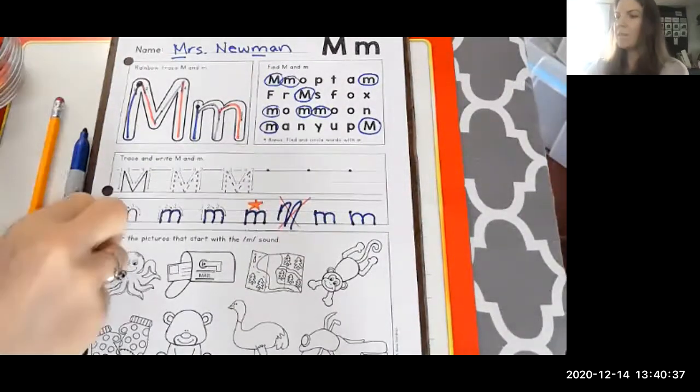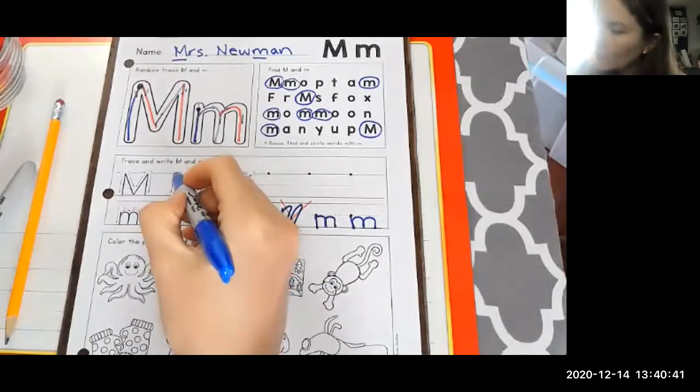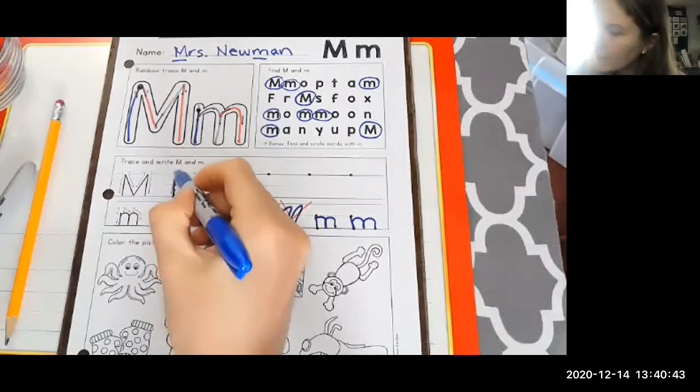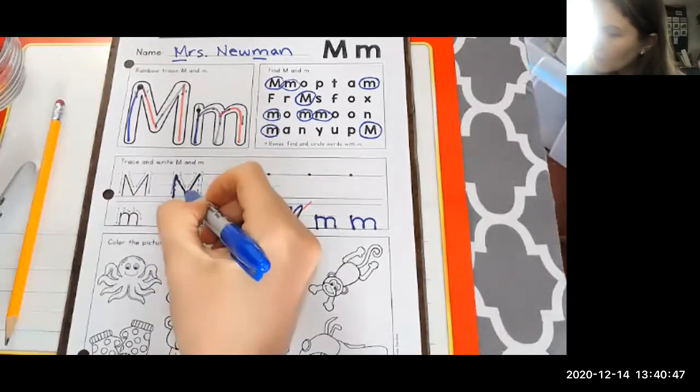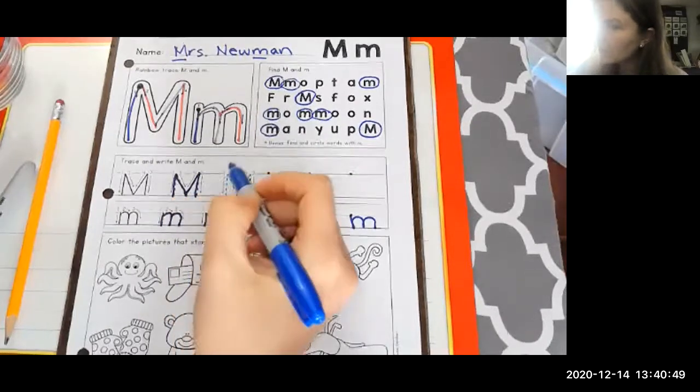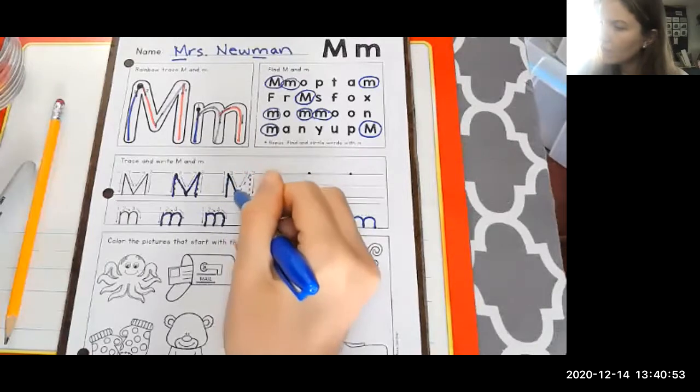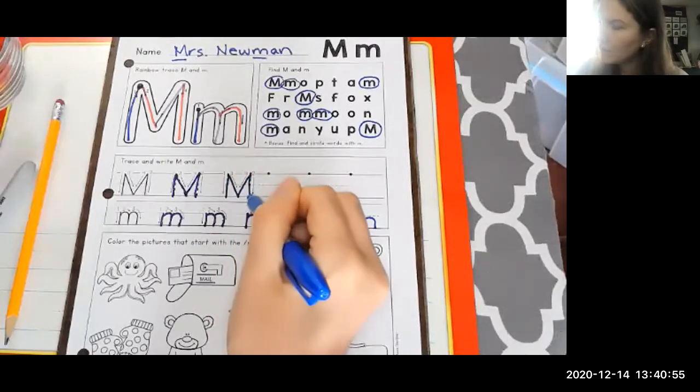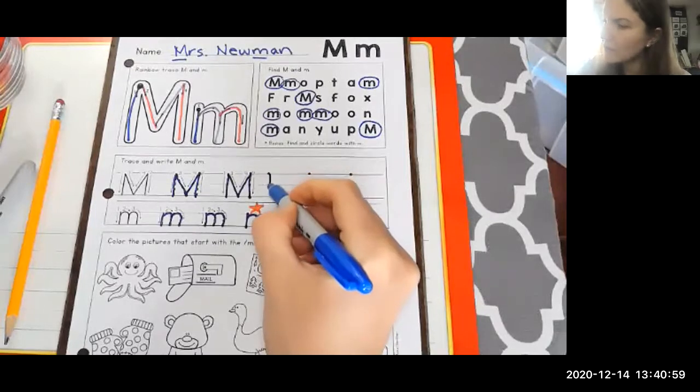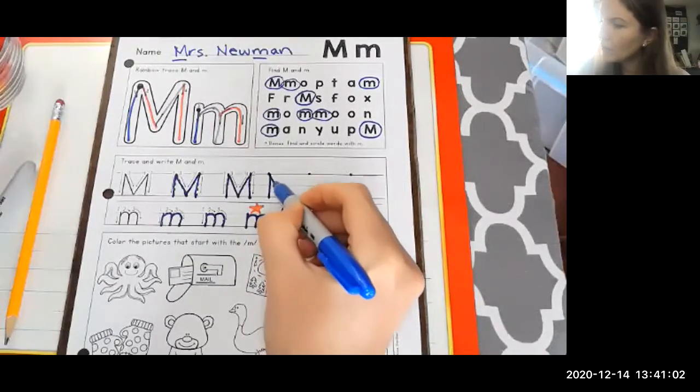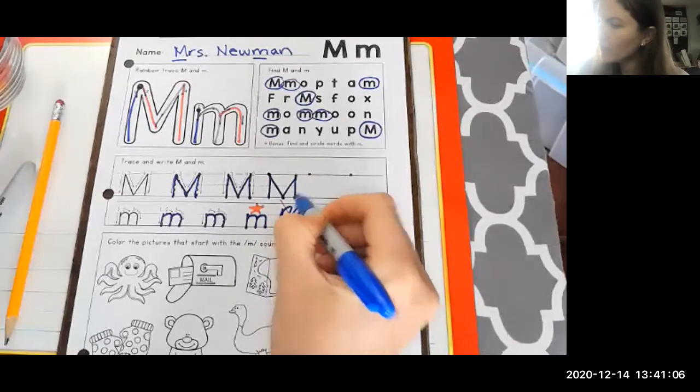Now let's go to the big M. Sometimes it's fun to just mix it up. Start at that number one dot. Way up high. Straight down. Trace. Two. Three. Four. Start at top. Straight down. Go down. Up. Down. Start at that top dot here. Let's go straight down. Now it's like we're making a triangle. Go down. And then it's like a V. Go up. And straight down.